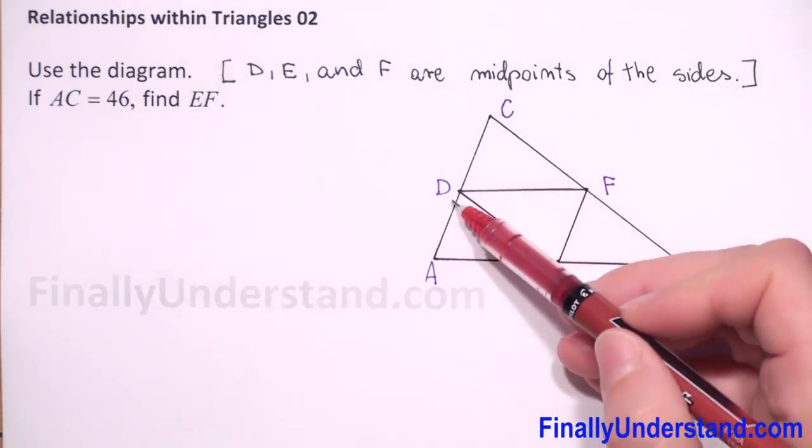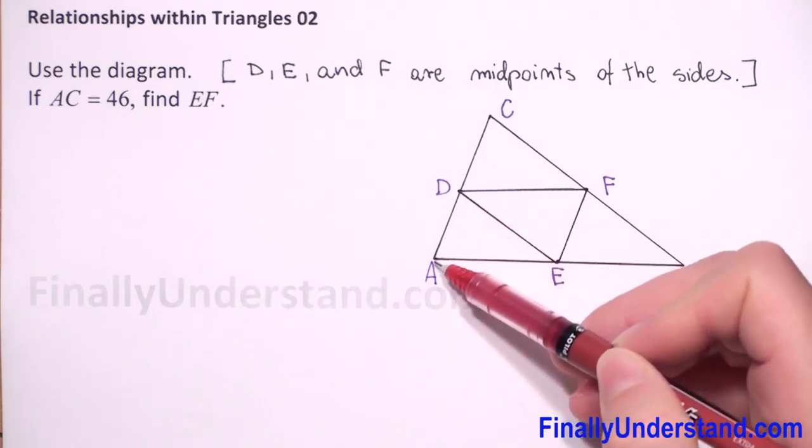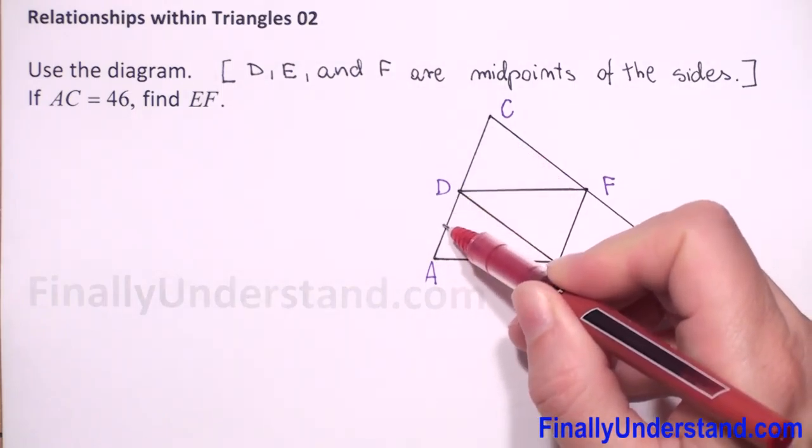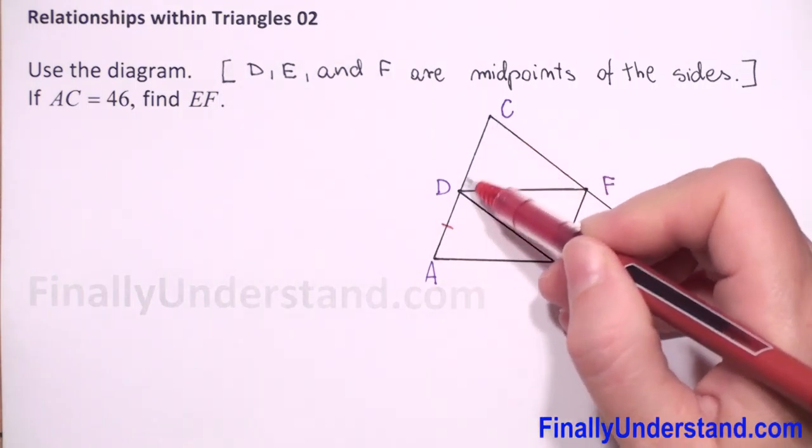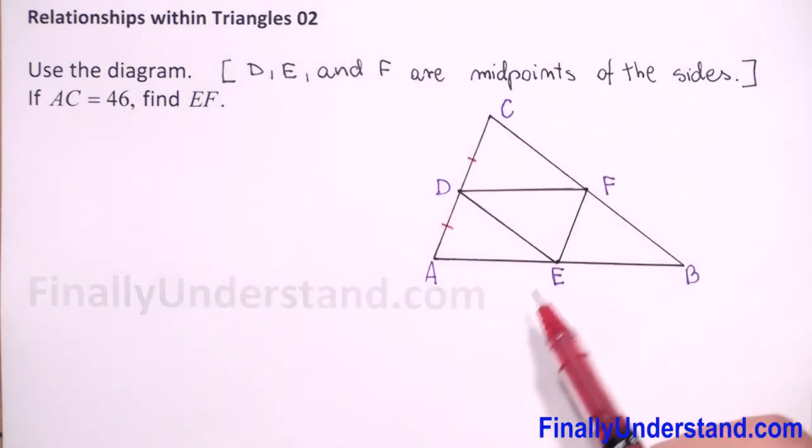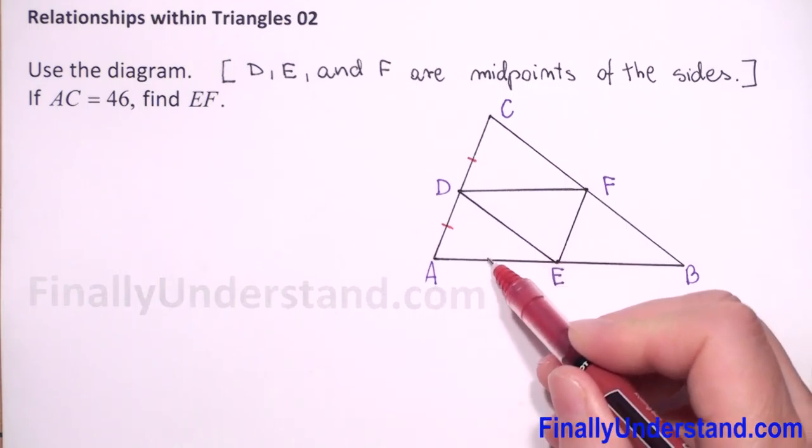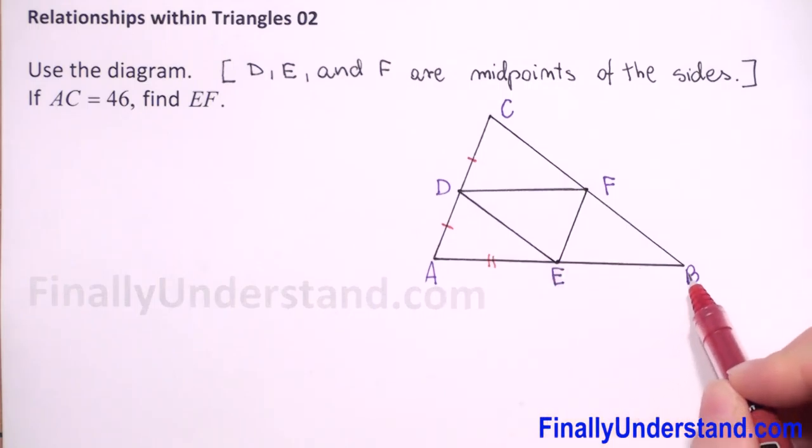So if D is the midpoint of AC, it means that AD is congruent to CD. What else? E is the midpoint of AB, it means that AE is congruent to BE.